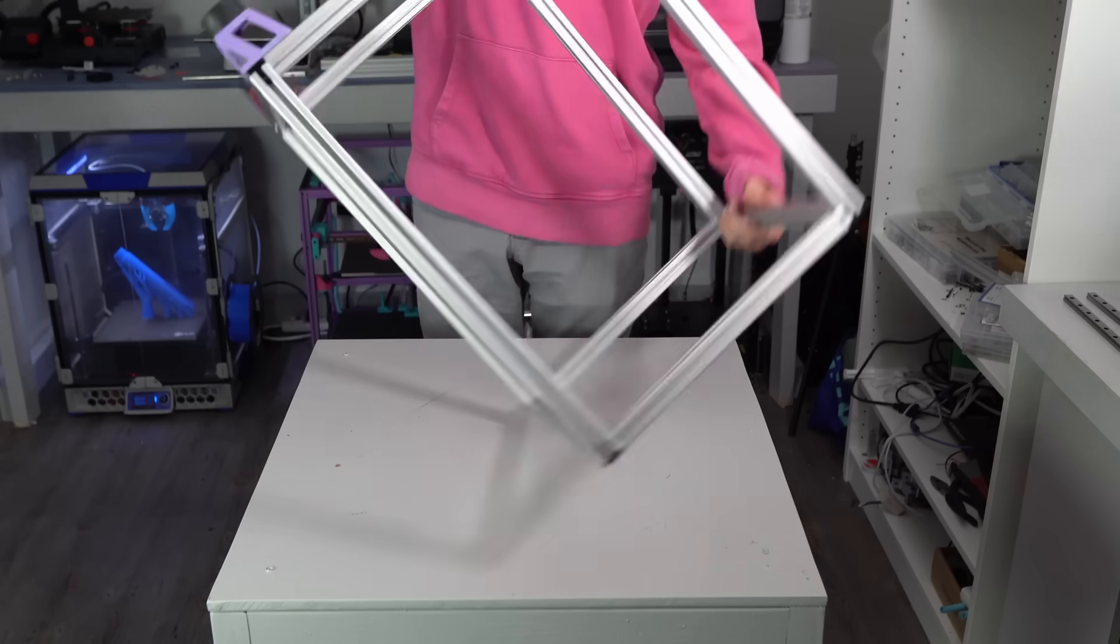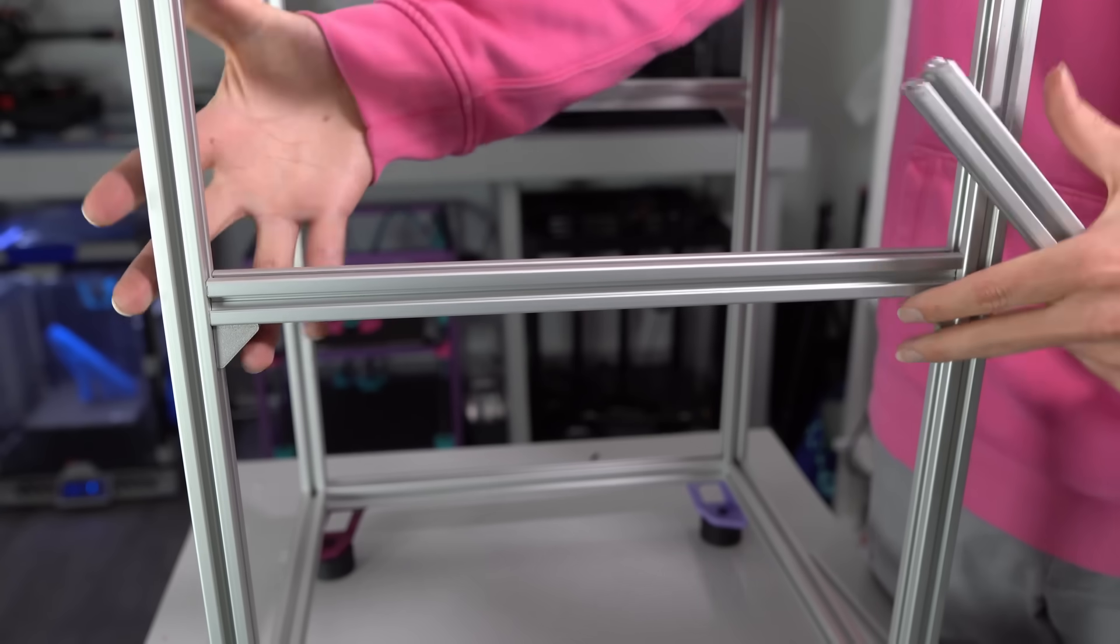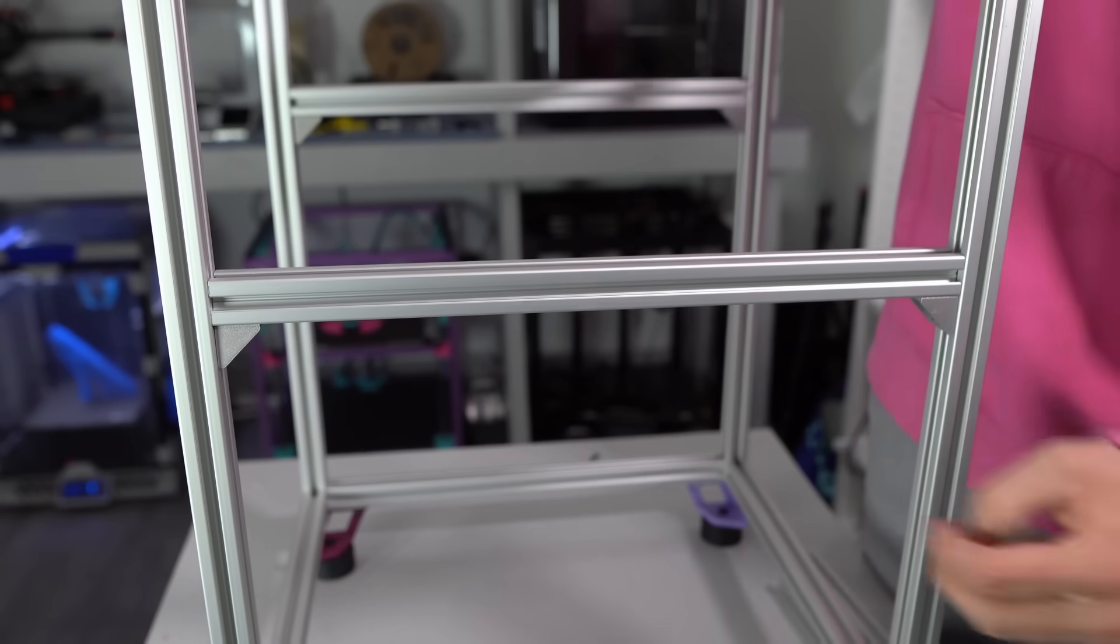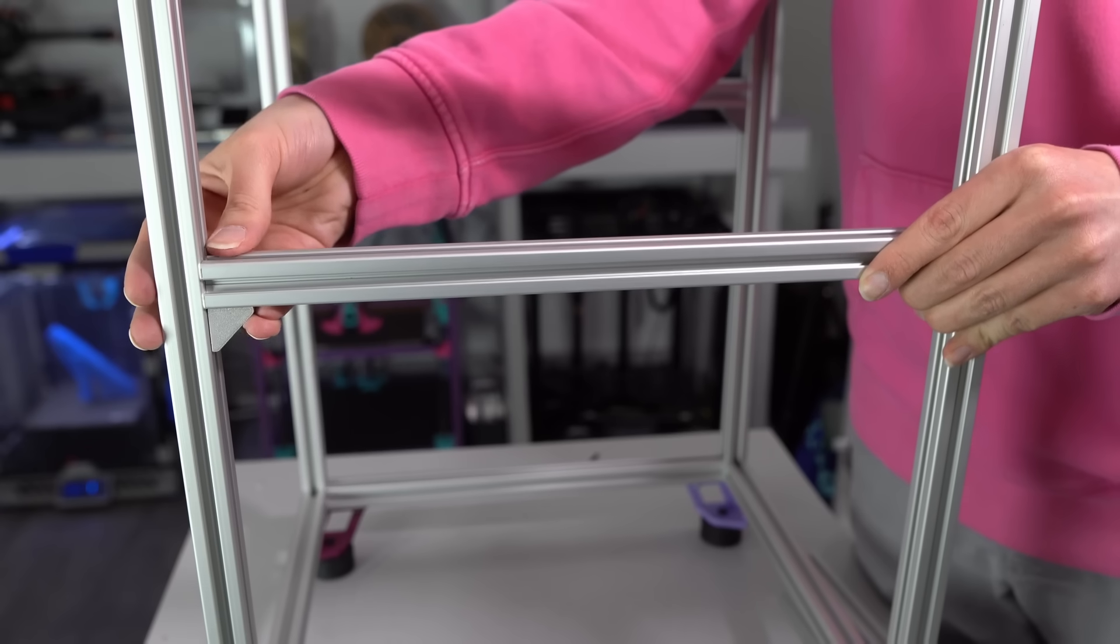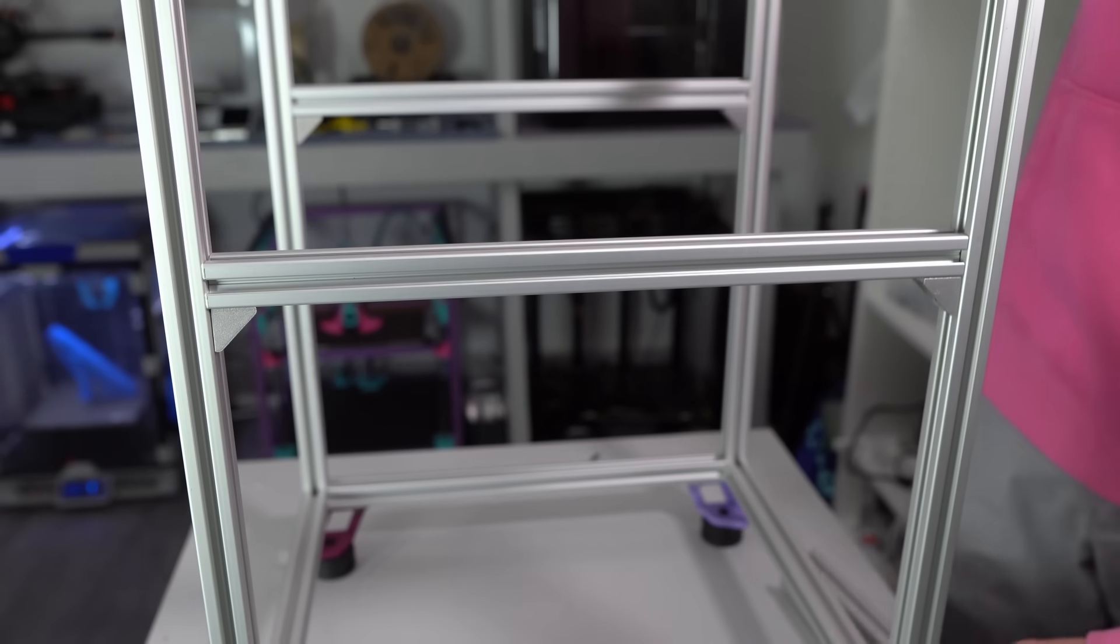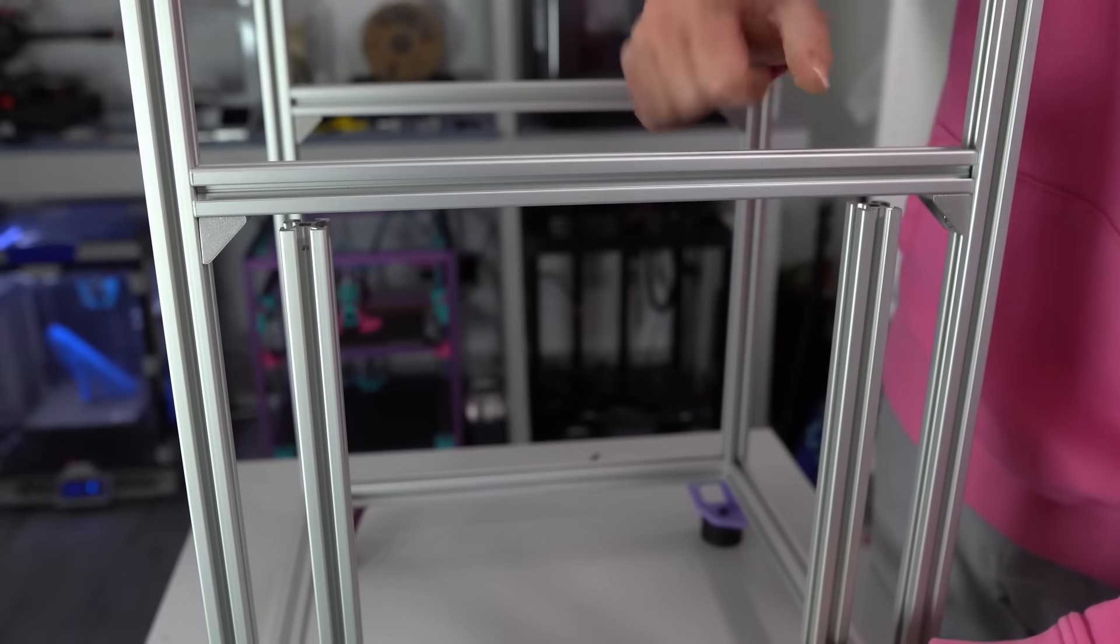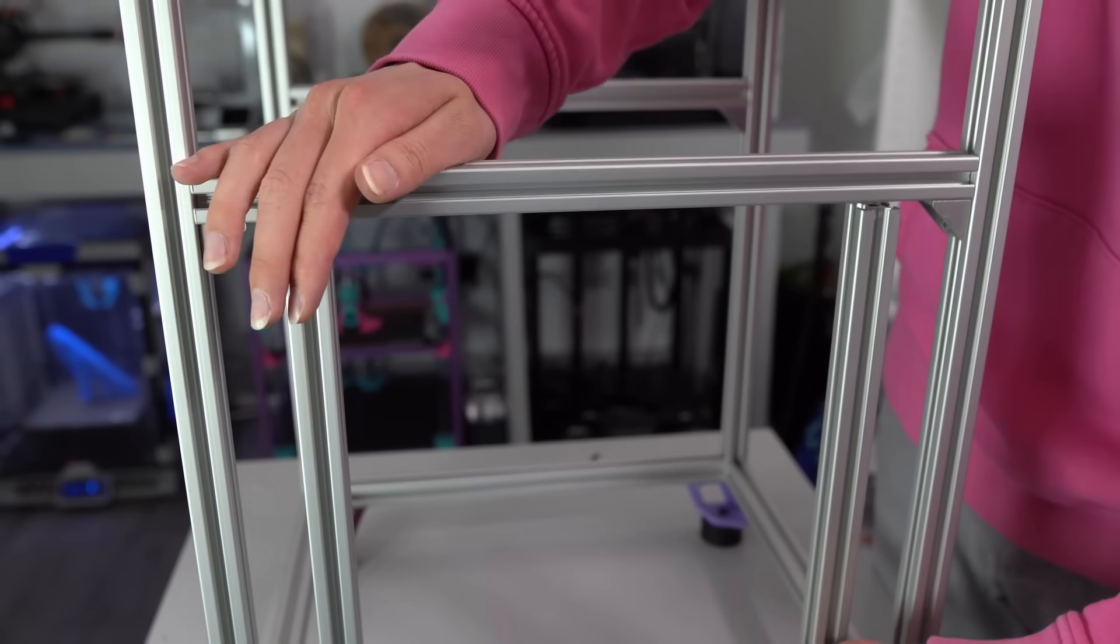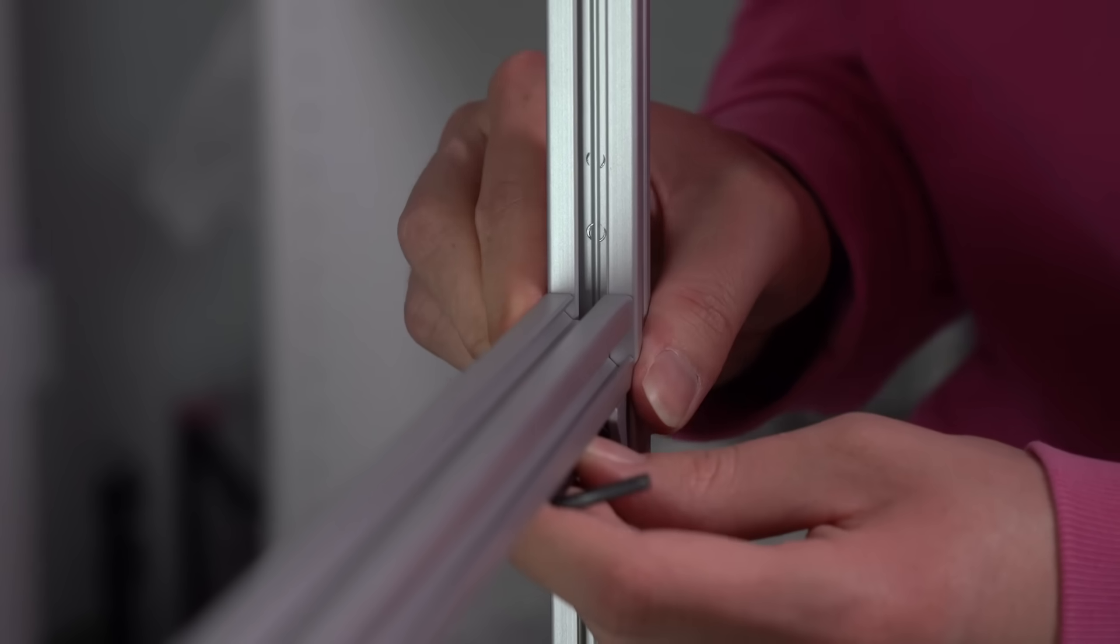Next up, we can install the extrusions for the gantry. Where exactly these extrusions need to be depends on the length of the linear rails that you're using for Z. In my case, I'm going to be using 300mm rails on Z, so the gantry extrusions need to be 300mm from the bottom of the frame. The easiest way to space them out is to use a couple of extra extrusions as a guide. The gantry extrusions attach to the rest of the frame using the right angle brackets that I showed earlier.